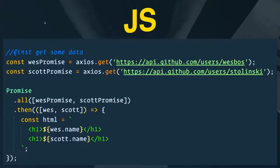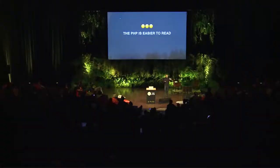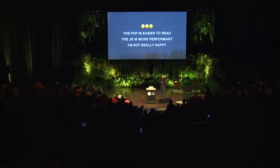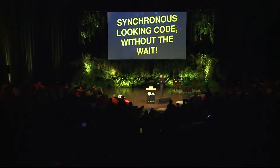But PHP is not so great because why am I waiting for Wes to come back before I go off and fetch Scott? In JavaScript, we can put both of those promises into variables and then wait until both of them come back — they can both fire off simultaneously — and then we can wait for both of them and use the data by creating some HTML and displaying it on the page. The PHP is kind of easier to read but JavaScript is more performant.